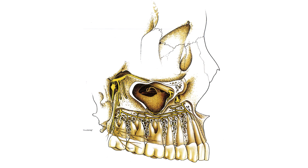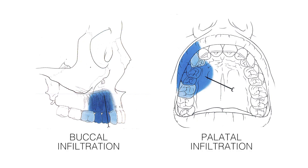Infiltration technique is able to be performed in the maxilla due to the thin cortical bone permitting diffusion of anaesthetic solution through the bone to the target nerve. It involves injecting into tissues immediately adjacent to the site that you want to anaesthetise. There are two types of infiltration techniques in the maxilla: buccal infiltrations and palatal infiltrations.